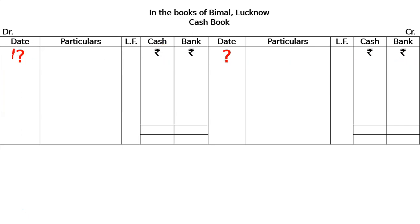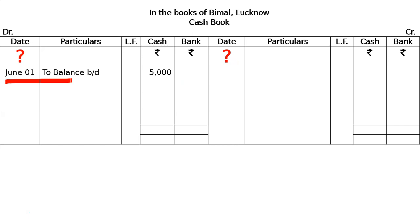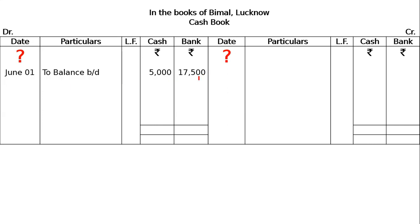Write the date — you can write the year — on both sides, and there is a cash and bank column with a rupees symbol, then we start. For the opening balance on June 1, we have two balances brought down: cash balance ₹5,000 and bank balance ₹17,500 on the left-hand side. This is the opening balance for both cash and bank, with cash amounts in the cash column and bank items in the bank column.